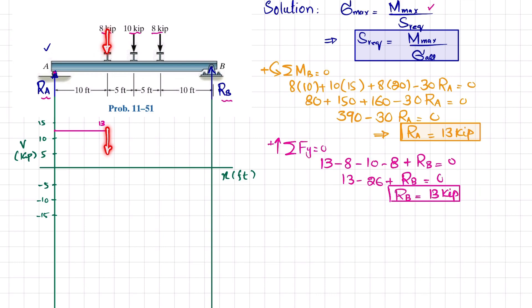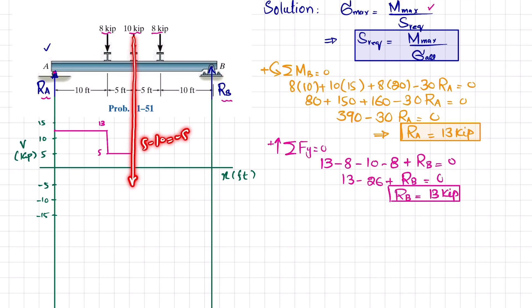At the first load point, an 8-kip downward load reduces the shear from 13 to 5 kips — a vertical drop. The shear remains at 5 kips until the 10-kip load, where 5 − 10 = −5 kips, dropping the shear force to −5 kips.